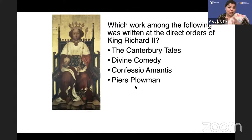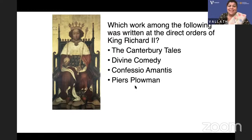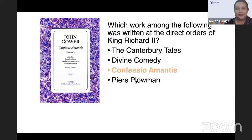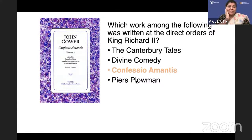Which work among the following was written at the direct orders of King Richard II? The Canterbury Tales, Divine Comedy, Confessio Amantis, or Piers the Plowman? It is John Gower, who wrote his only English work — Confessio Amantis — at the direct orders of King Richard II. Before that, John Gower wrote Speculia Meditantis in French and Vox Clamantis in Latin. And King Richard II asked him to write something in English — that is how he wrote in English.